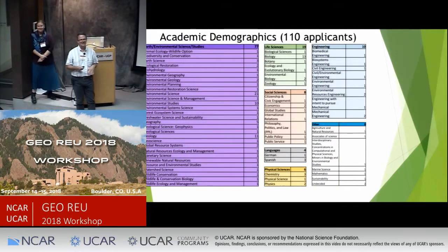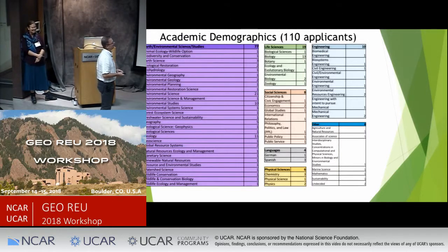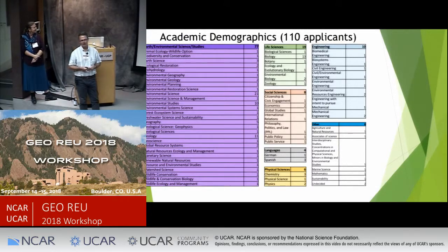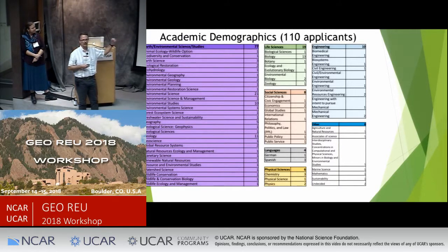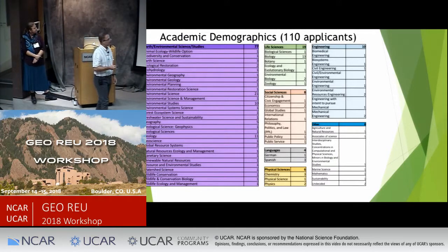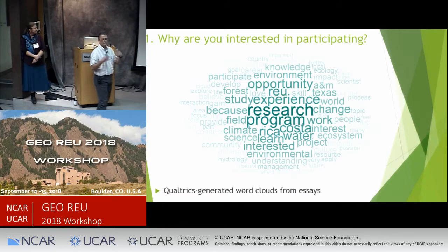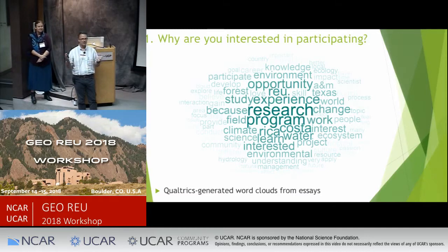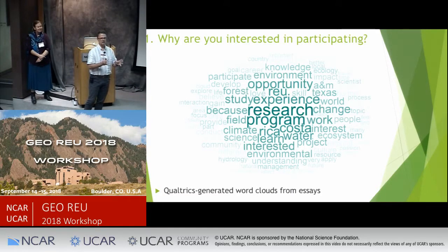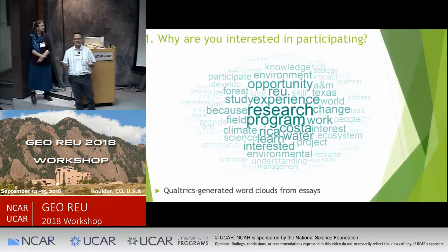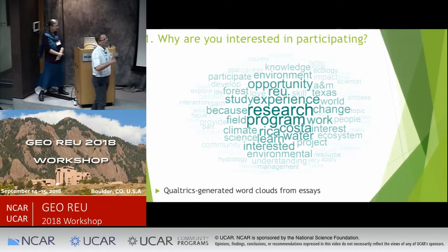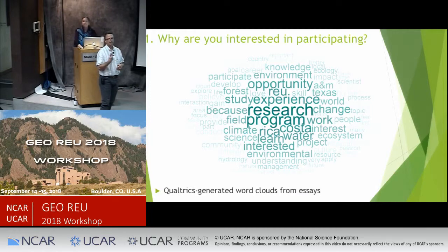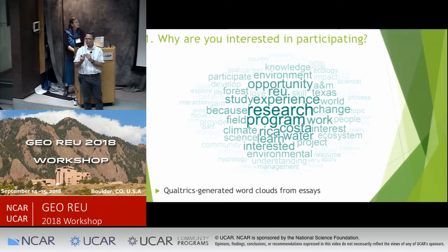Continuing with this data-rich approach: we categorized the academic majors of all our applicants, identifying where we were getting high clusters and where we weren't, to guide diversity efforts. Qualtrics will also generate word clouds from all the thousands of words in your essay questions — not for making hard decisions, but for understanding the means and medians of what people were saying. We also had Likert scale questions to get a feeling for what our applicant pool looked like overall.